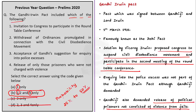This is the beauty of the elimination technique. By applying this technique, you have increased your accuracy and your chance of getting it right. Now let us apply this technique again to narrow down the answer. Let us take the fourth statement: Release of only those prisoners who were not charged with violence. When we read about Gandhi-Irwin Pact, we know that Gandhiji demanded release of political prisoners not convicted of violence from jails. This demand was accepted by Viceroy Irwin.